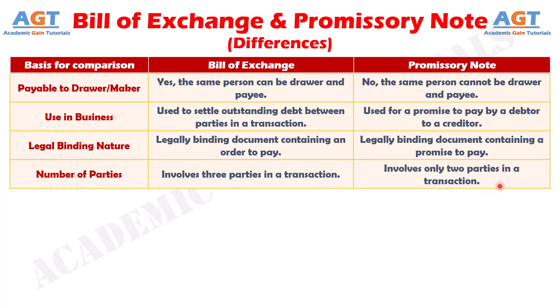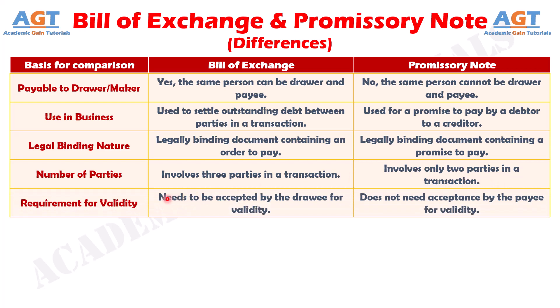Number thirteen: For a Bill of Exchange to be valid, it needs to be accepted by the drawee, whereas a Promissory Note does not need acceptance by the payee to be valid.